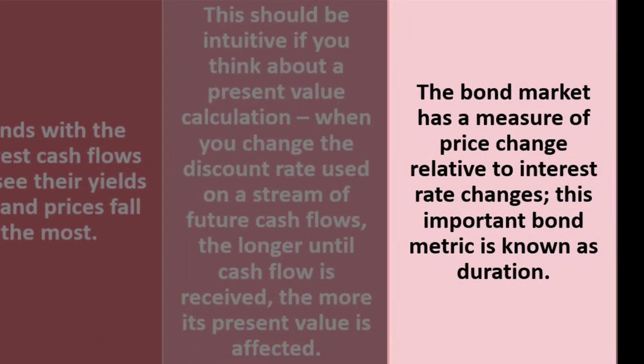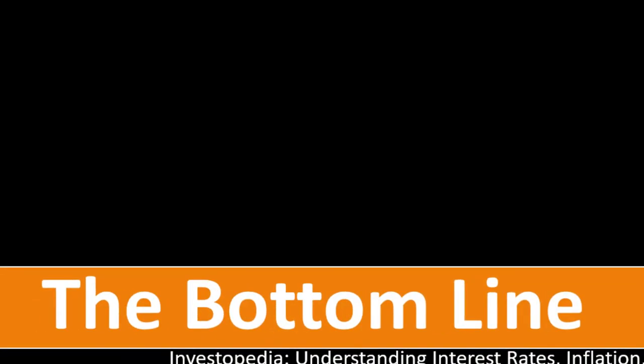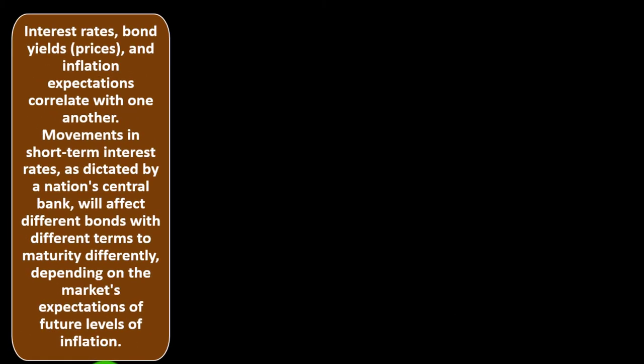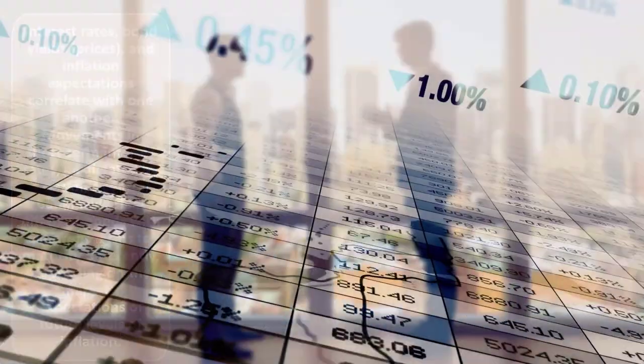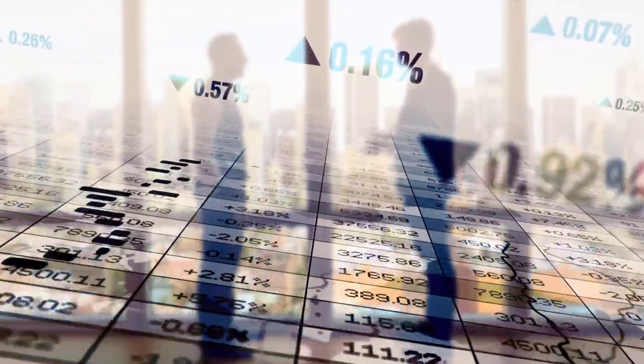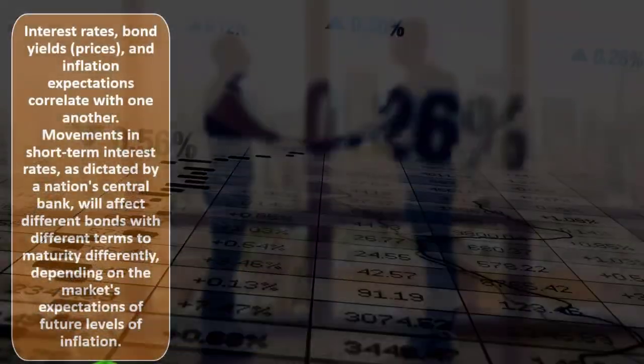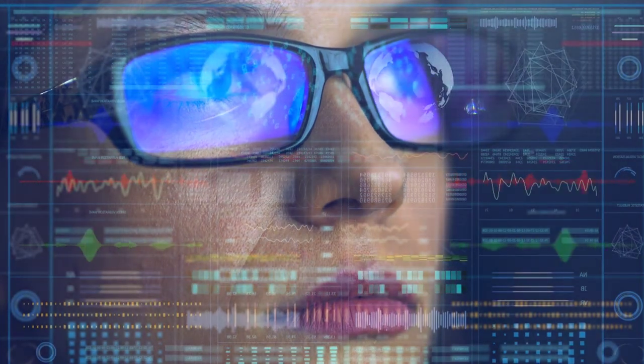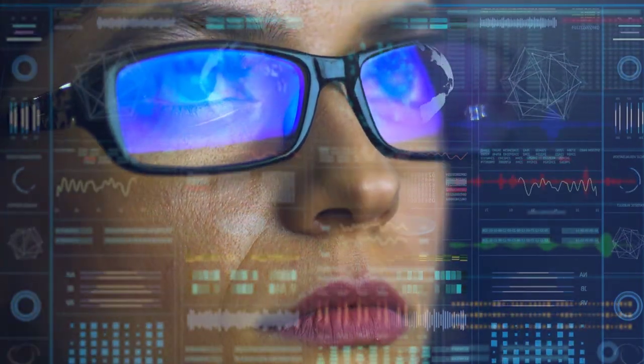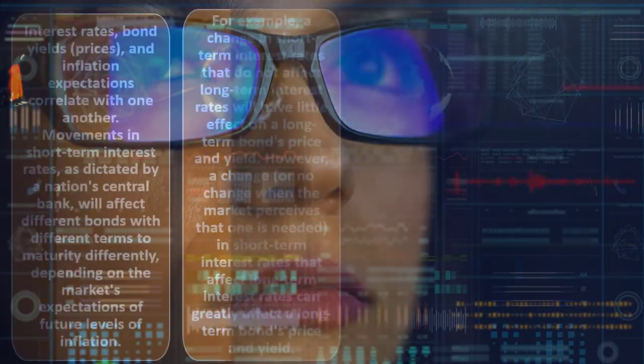The bond market has a measure of price change relative to interest rate changes known as duration. In summary, interest rates, bond yields, prices, and inflation expectations all correlate with one another. Movements in short-term interest rates as dictated by the central bank will affect bonds with different terms to maturity differently, depending on the market's expectations for future inflation.